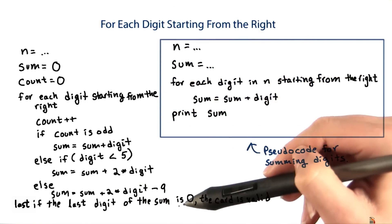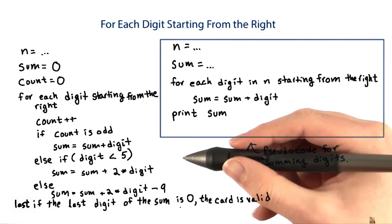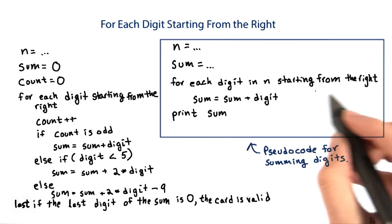How would you write Java code for this? There's a lot going on here. So first, let's do one part of it. How would you change the code for summing all of the digits, so that it only sums every other digit, starting with the rightmost?